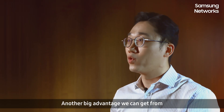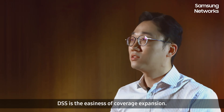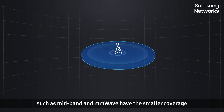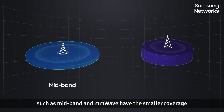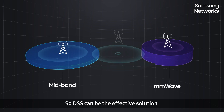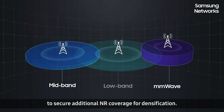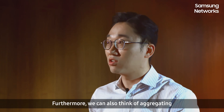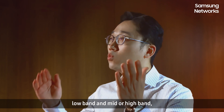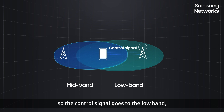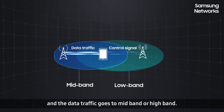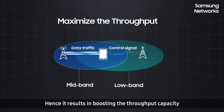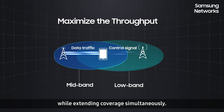Another big advantage we can get from DSS is the easiness of coverage expansion. Since the new bands being utilized in 5G, such as mid band and millimeter wave, have smaller coverage than the lower band, DSS can be the effective solution to secure additional 5G coverage for densification. Furthermore, we can also think of aggregating low band and mid or high band, so the control signal goes to the low band and the data traffic goes to the mid band or high band. Hence, it results in boosting the throughput capacity while extending coverage simultaneously.